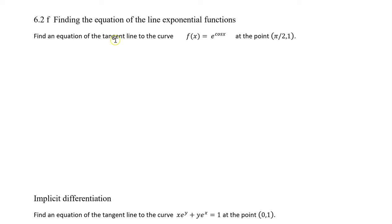This is a review of finding the equation of a tangent line, but this time we're going to be using an exponential function. If you remember, our slope is our derivative at that point. So we need to first find our derivative of π/2, which will give us our slope. Let's find our derivative.